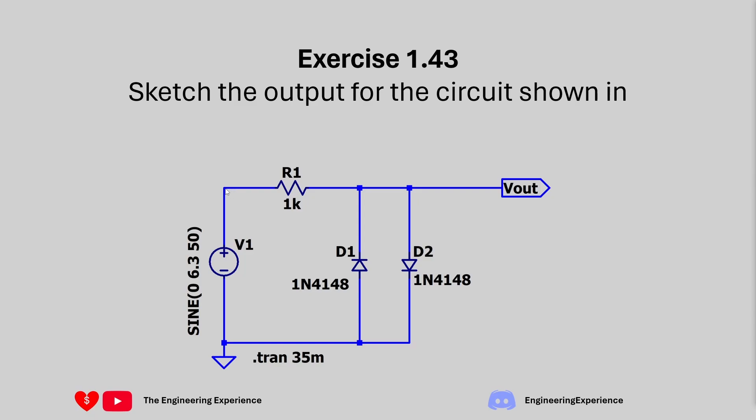So we have a 6.3 volt signal. I've given 50 hertz, the frequency has not been provided in the question and then this is followed by one kilo ohm resistor and then two diodes. The diodes are connected such that one's pointing forward and the other one's pointing in the reverse direction.